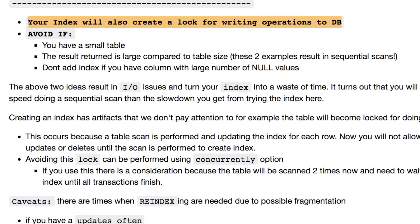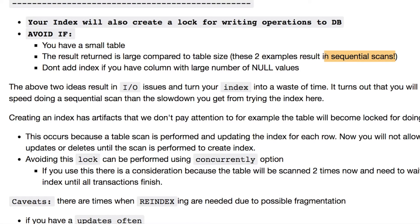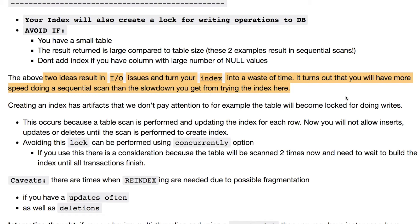This is extremely important: you're creating a lock when doing write operations with this index. This could become very problematic if you have a lot of data, and there are workarounds such as using CONCURRENTLY to avoid this lock. For small tables, avoid using this. If your table is very large but your returned results are also very large, avoid using this, because in both cases Postgres will do a sequential scan instead of wasting time running values through the index. Also, if you have columns with a large number of null values, don't add an index on that column. I/O operations cause issues because you're wasting time on the index if you have a small table, and if you have a large number of results returned there will be a drastic slowdown — Postgres internally will decide to do a sequential scan instead, and your index or constraint will basically be dead.